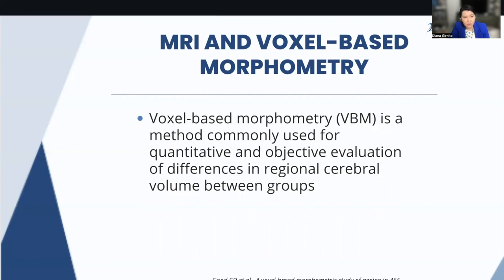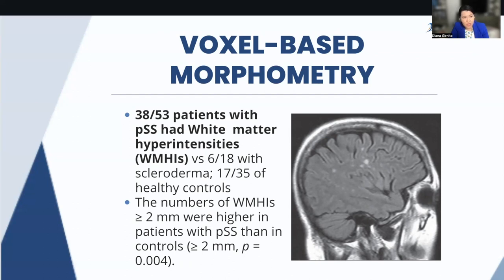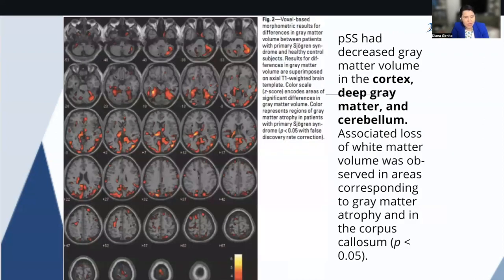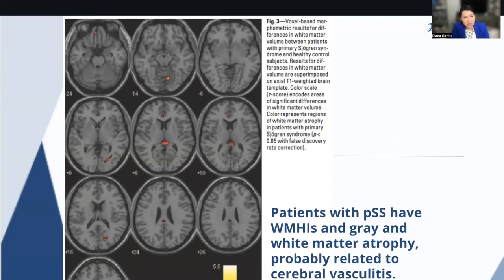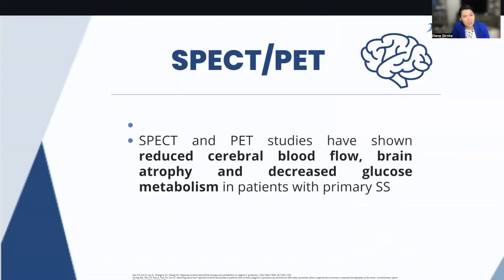We also use combinations of tests like MRI and voxel-based morphometry, a method used to quantitate and objectively evaluate differences in regional cerebral volumes. This showed that patients with Sjögren had white matter hyperintensities associated with more atrophy, likely related to cerebral vasculitis or vessel inflammation. Other tests like single photon emission CT or PET scans evaluate blood flow in the brain, and patients with Sjögren have been shown to have reduced cerebral blood flow and brain atrophy.